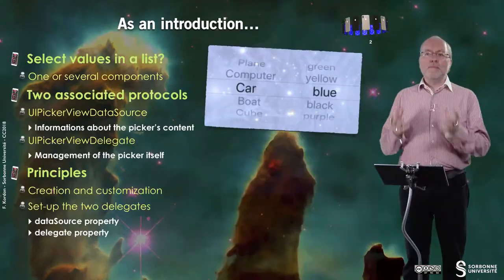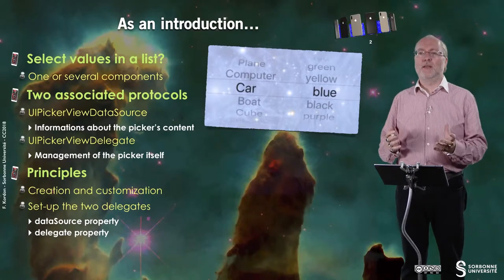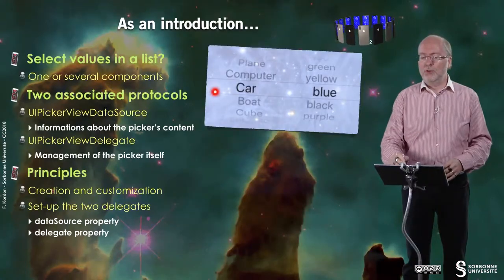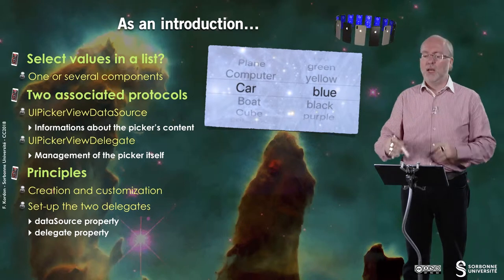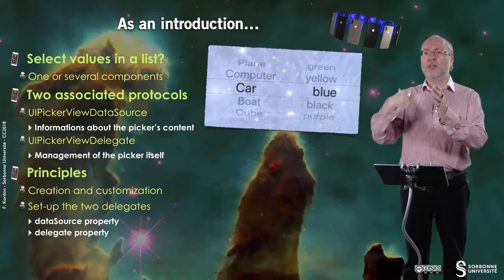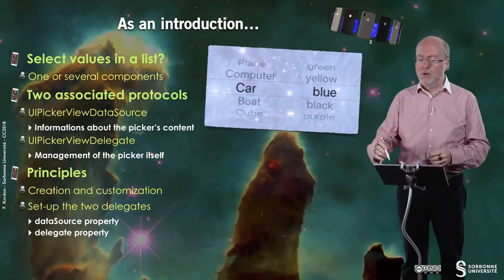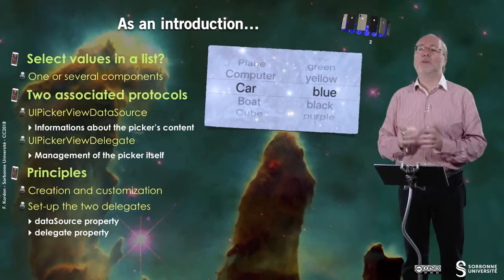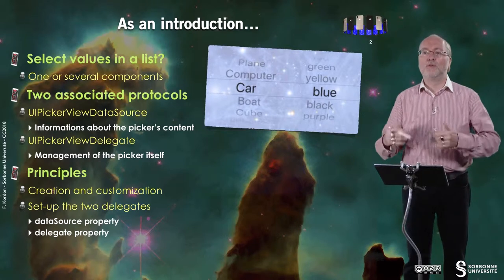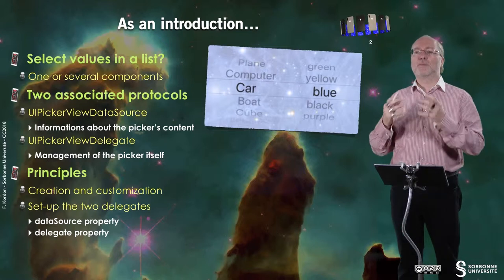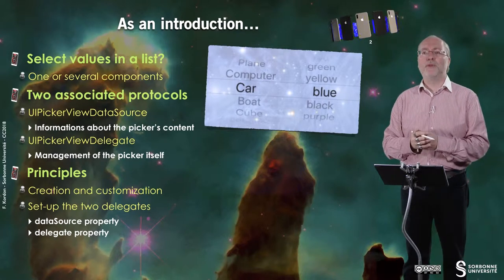Hello everybody. In this video I will present a new object called UI Picker View. Sometimes you need to select values in a list, and this list may have one or more components. It usually looks a bit like a scroll roll — if you do a scroll gesture it will change value, and if you do that on the second column it will change that value. What is in front is the current selected value of this mechanism.